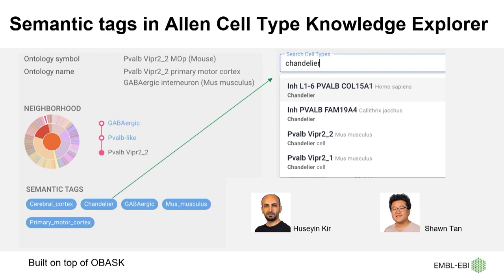Here's one example of the Allen Cell Type Knowledge Explorer, a project we've worked on with the Allen Institute. In this case, we have a comprehensive classification of cell types in the motor cortex of three species. With these tags, you can click on 'chandelier' — which users would know refers to a chandelier cell — and find chandelier cells across species. We're working to extend this to the whole human brain, and this kind of tagging and searching is going to become increasingly useful.